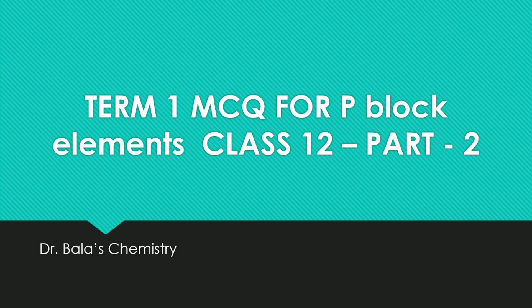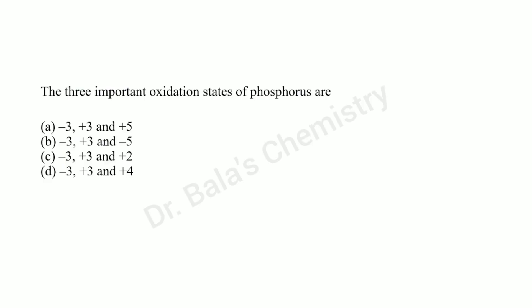The three important oxidation states of phosphorus are minus three, plus three, and plus five. These are the more favorable oxidation states of the Group 15 elements.